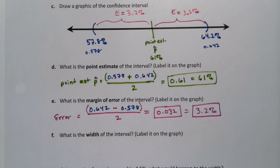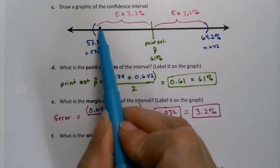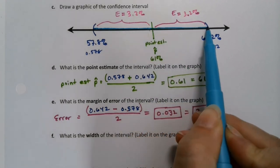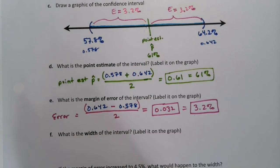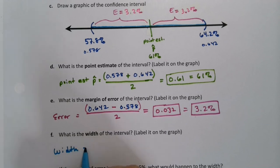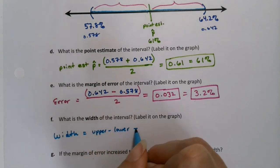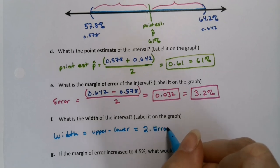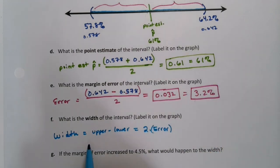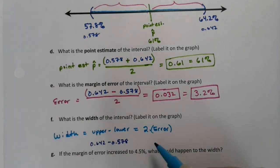Now, what about the width of the interval? Well, the width of the interval is the distance from the lowest part to the highest part. It's the total distance there. So the width is two errors. So it's the upper minus the lower, 0.642, or in other words, it's two times the margin of error. Now if you don't believe me, let me show it to you. 0.642 take away 0.578, and then two times 0.032. I bet you they come out to be the same thing.